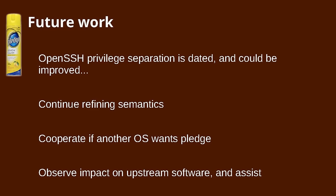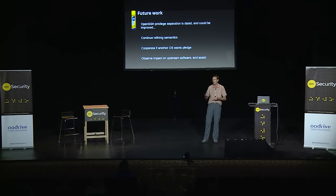There's future work to be done. Having tried to apply Pledge to so much of our source tree, we've discovered that OpenSSH — one of our premier privilege-separated daemons and clients — doesn't have as much separation as we want. We should revisit that. Also, we want to refine the semantics, though not too far, because other operating systems have indicated interest in adopting something like this. It's probably easier for Solaris than Linux, given Linux's binary compatibility constraints.